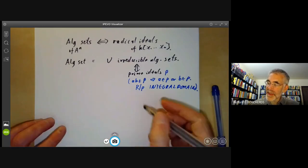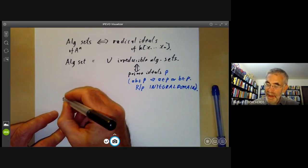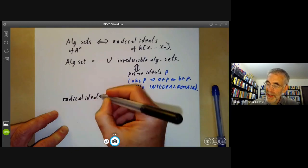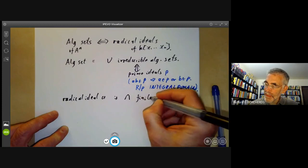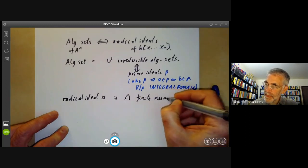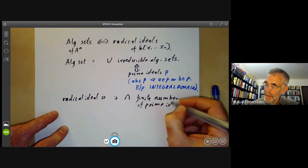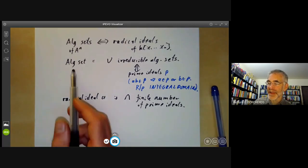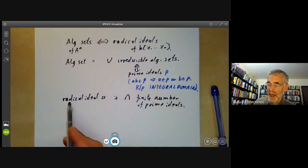So this gives us the following theorem that says any radical ideal a is an intersection of a finite number of prime ideals. So this is just the theorem that says an algebraic set is the union of a finite number of irreducible algebraic sets. We've translated it into ring-theoretic language.